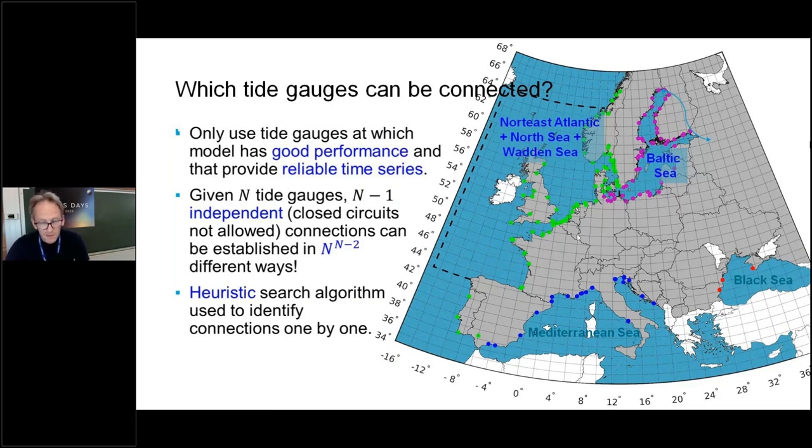But these connections can be established in a huge number of ways, so it's n times n to the power n minus two. This is a bit too much to evaluate, in particular if n is on the order of a few hundred. So what we applied was a heuristic search algorithm to identify the connections one by one.